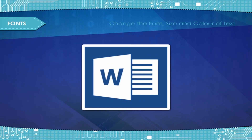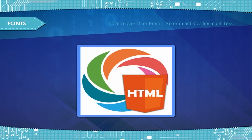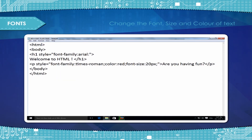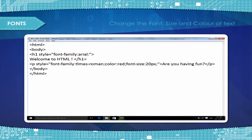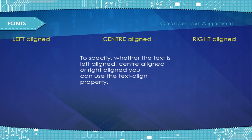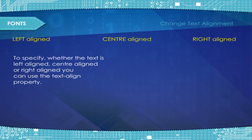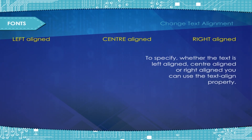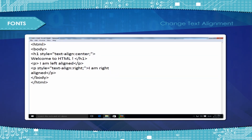You are familiar with styling text in a word processing software like Microsoft Word. How can you style text in HTML? You can use the properties font family, color, and font size. To change text alignment — to specify whether the text is left aligned, center aligned, or right aligned — you can use the text align property.